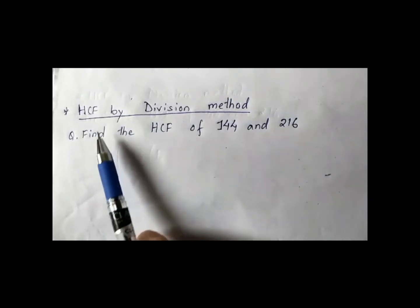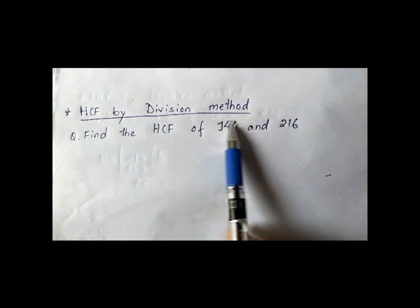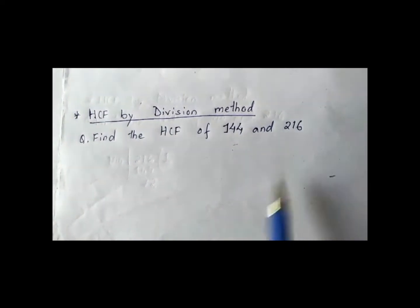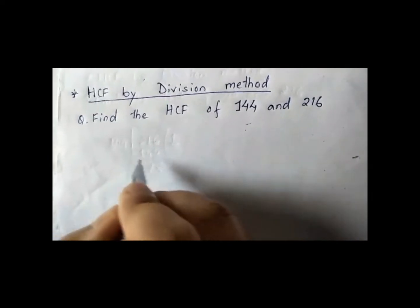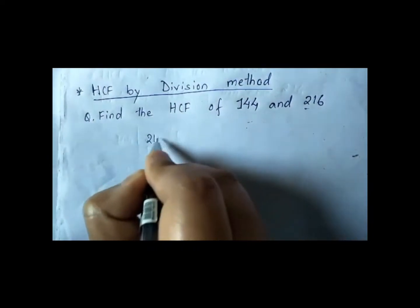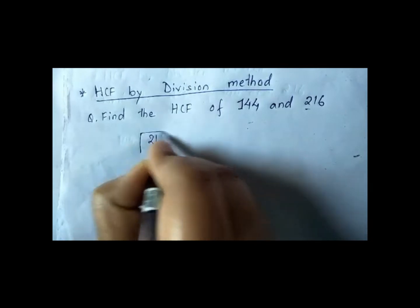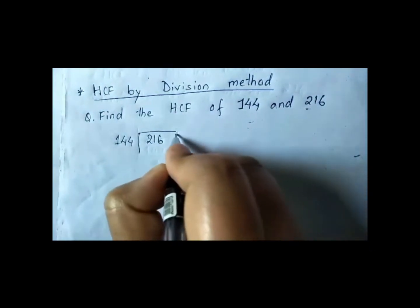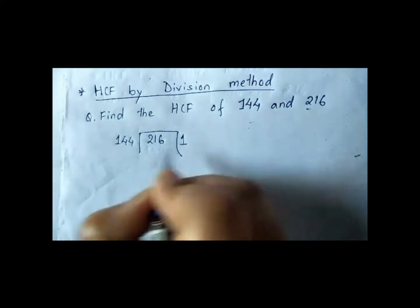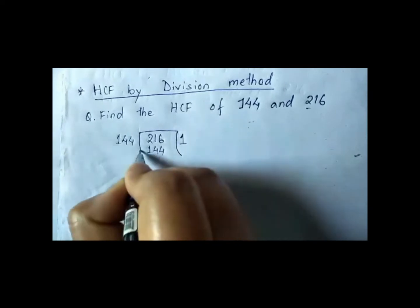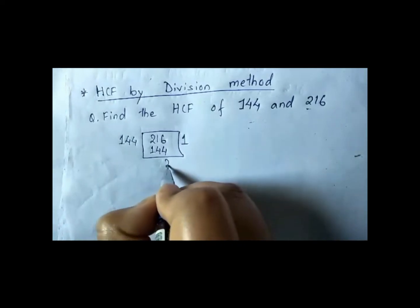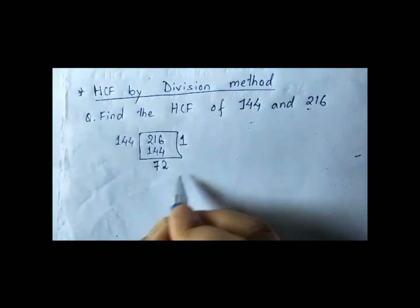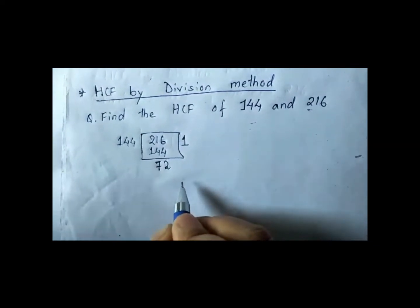First we will discuss how to find HCF by division method. Find the HCF of 144 and 216. We take the greater number, and the smaller number will be the divisor. It goes with 1, remainder is 72.